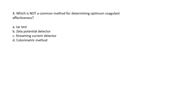Question 4: Which is not a common method for determining optimum coagulant effectiveness? The jar test, zeta potential detector, streaming current detector, or colorimetric method? The answer is colorimetric method.